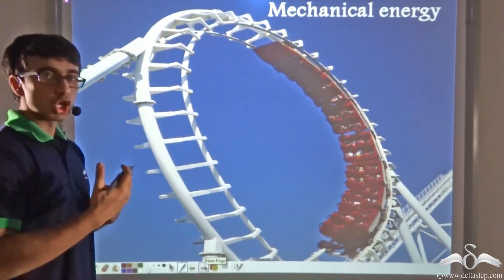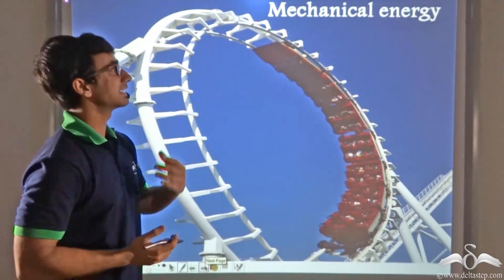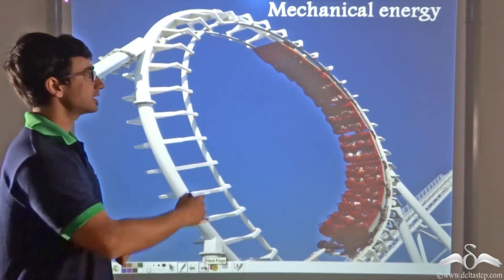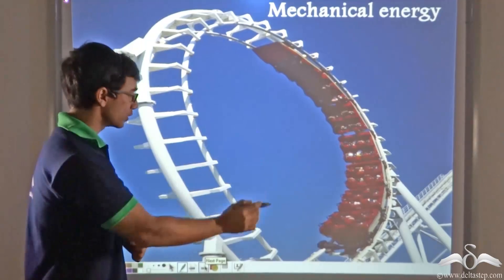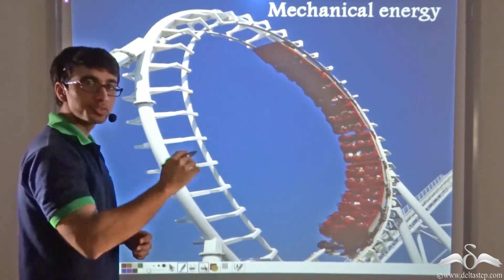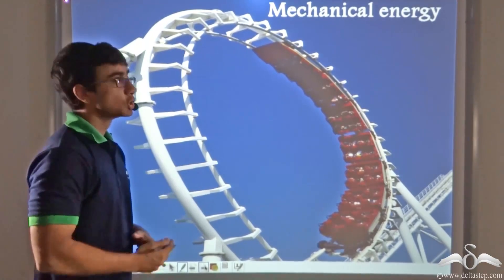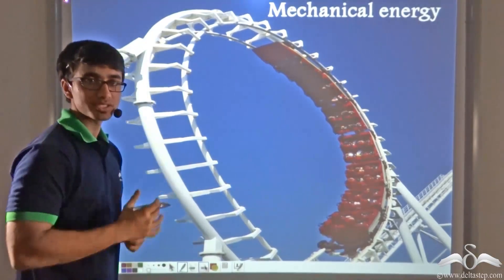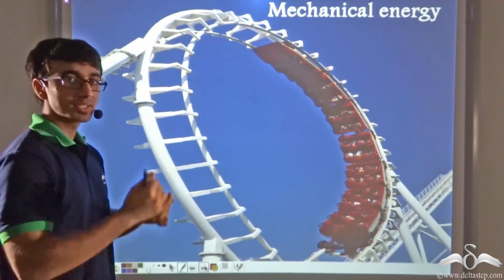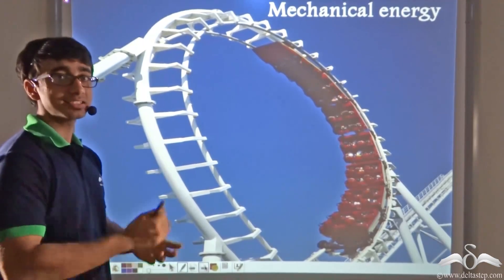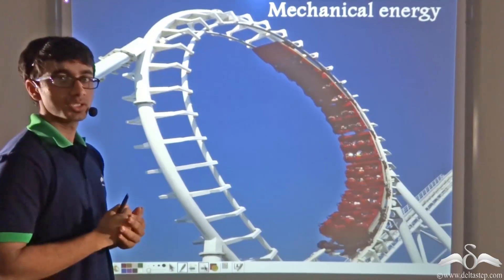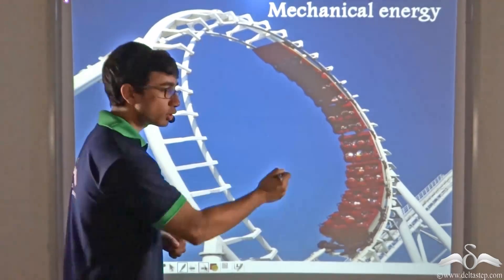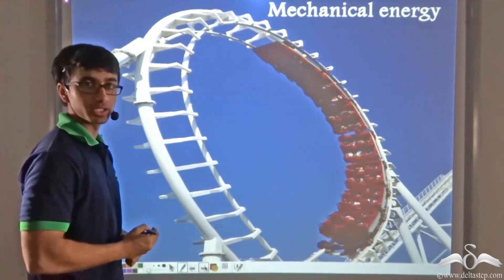Now consider mechanical energy, a very common form of energy. A roller coaster going along rails and moving from one point to another is a good example. Mechanical energy is the energy that a body possesses because of its state of motion and its position. So mechanical energy depends on two things: the motion of the body and the position of the body.